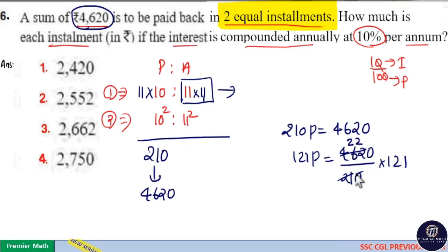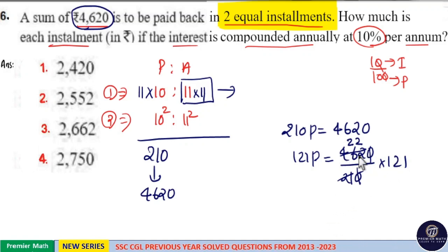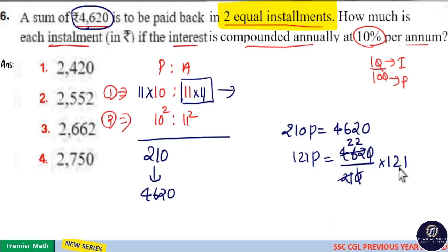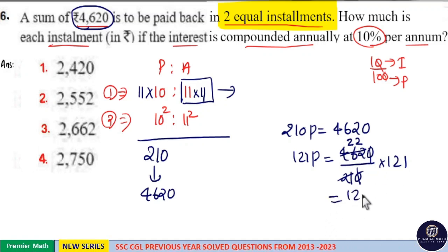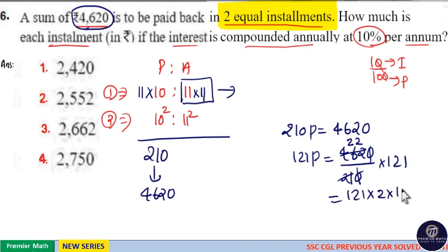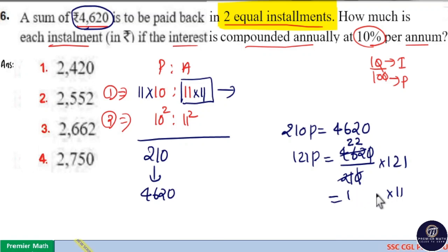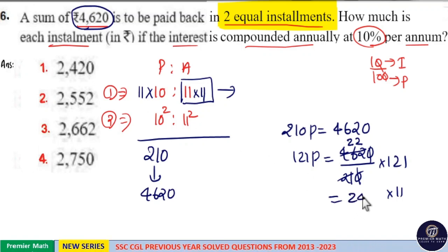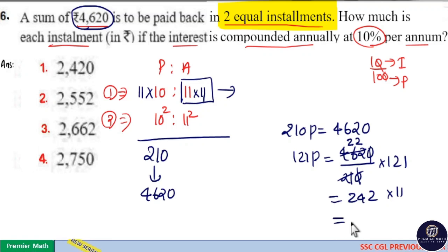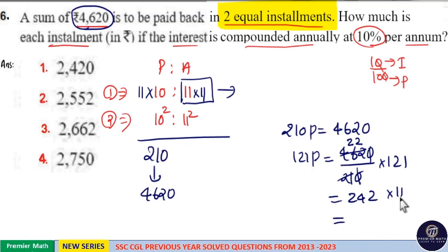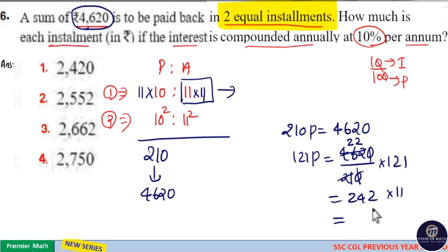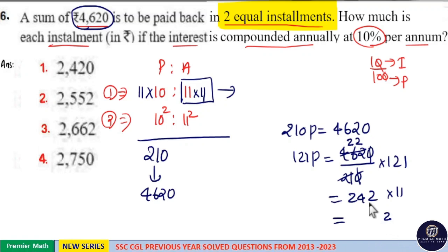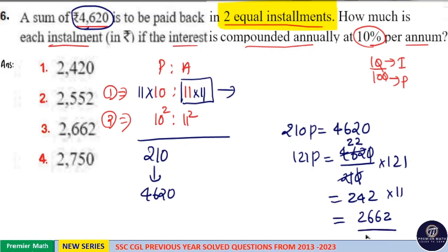Cancelling zeros: 22 into 121 means 121 into 2 into 11, which is 242 into 11. To multiply 242 by 11: write the unit digit 2, then 4 plus 2 is 6, then 2 plus 4 is 6, then write 2. So the result is 2, 6, 6, 2 — that is, 2662.